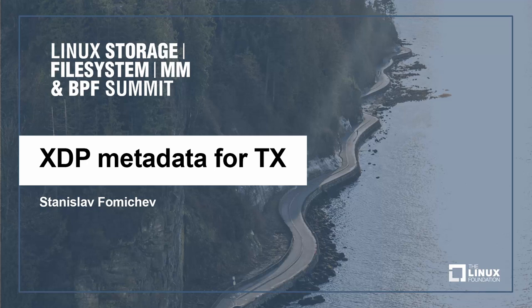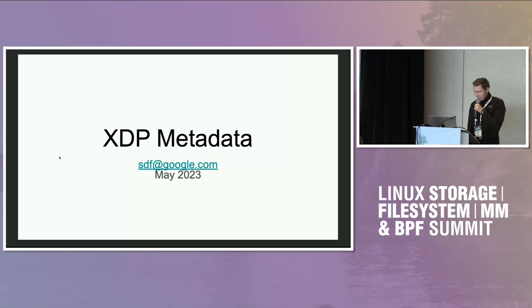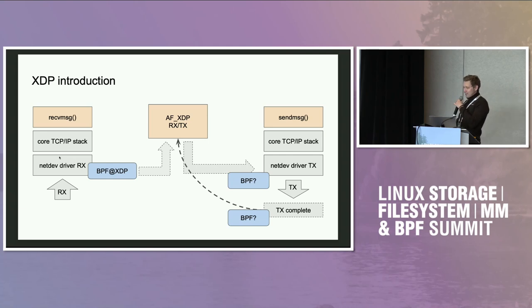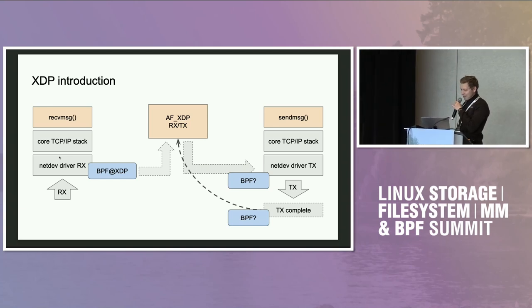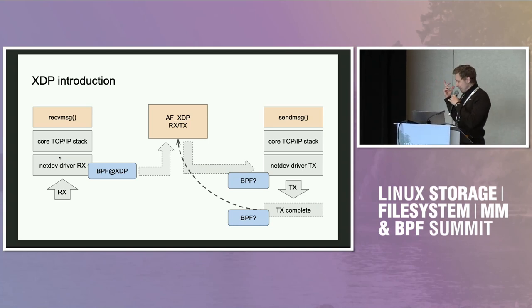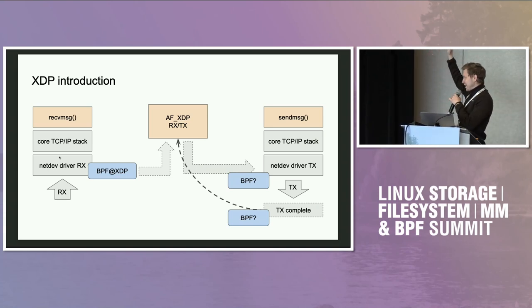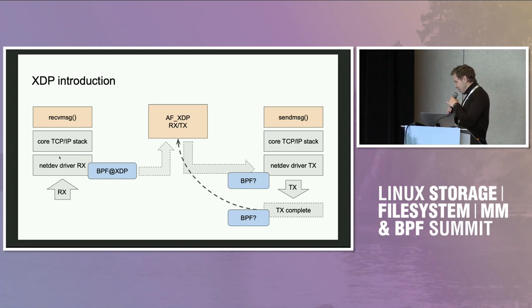I'm going to talk about XDP metadata, mostly from the transmit side, but I'll start with a generic XDP intro. XDP is an old-school style hook, probably one of the first ones for BPF, placed low in the driver stack. We have this BPF hook which can receive a packet and do something with it. We've also added AF_XDP, a new protocol family that uses this XDP hook to route packets into user space rings and produce packets to send out.